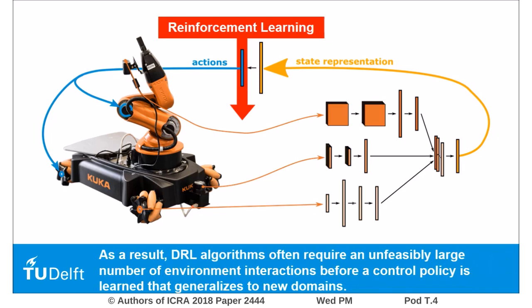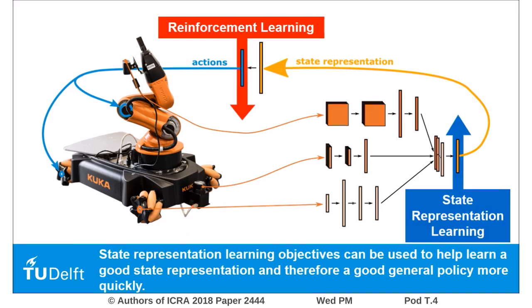As a result, deep reinforcement learning algorithms often require an unfeasibly large number of environment interactions before a control policy is learned that generalizes to new domains. State representation learning objectives can be used to help learn a good state representation and therefore a good general policy more quickly.